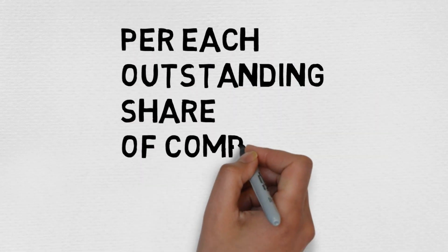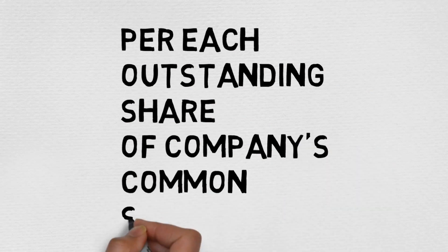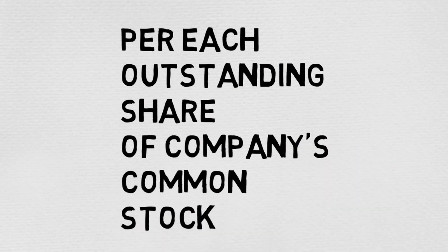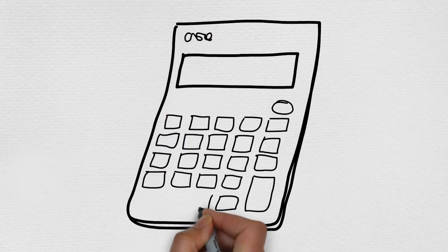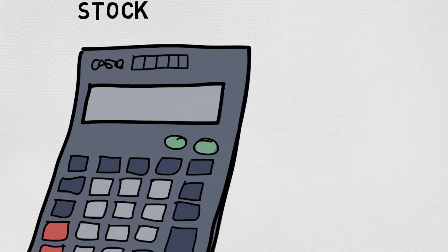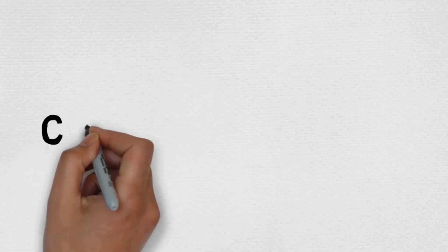Let's dive into an example. EPS — how is it calculated? It's simple: a company's profit minus the company's dividends, divided by the number of shares outstanding.